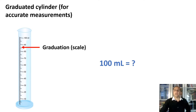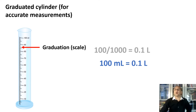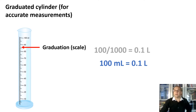Can you convert 100 milliliters to liters? You are correct if you say 0.1 liter. All you have to do is divide 100 by 1,000 — because in 1 liter there are 1,000 milliliters. Therefore, you simply move the decimal point to the left three times.